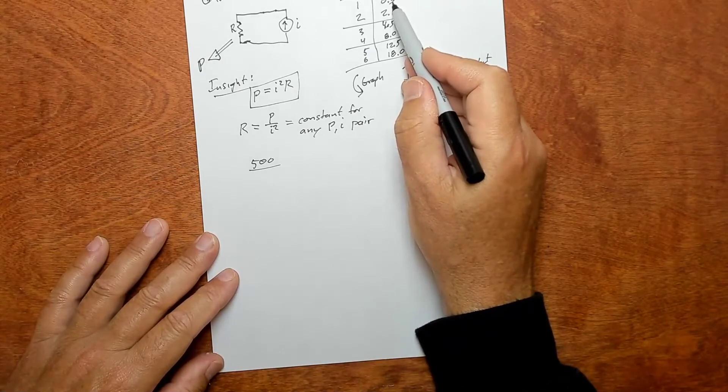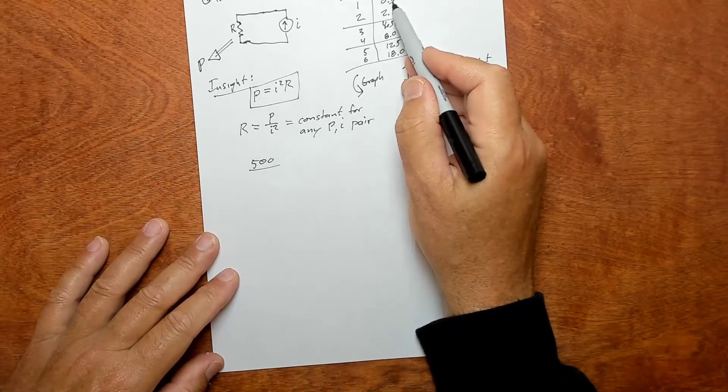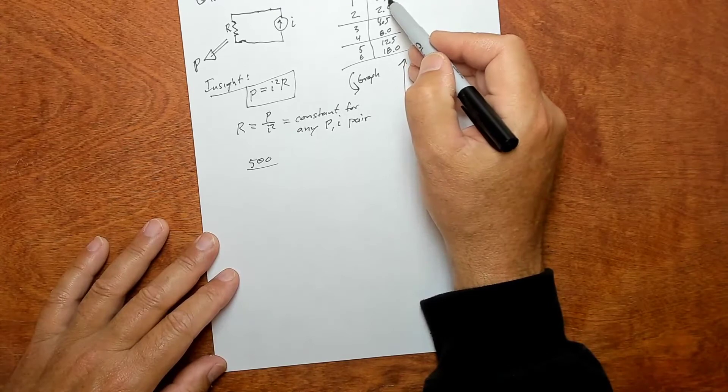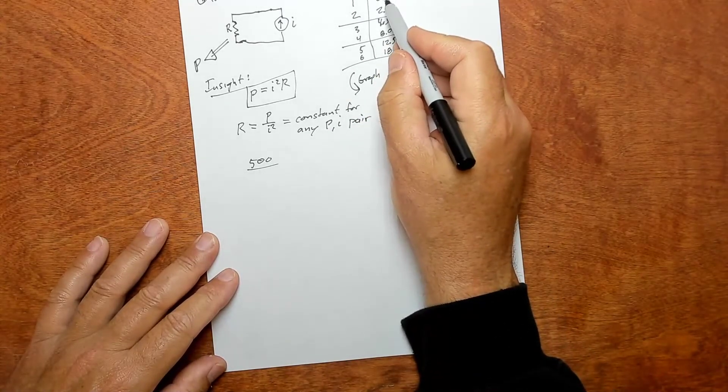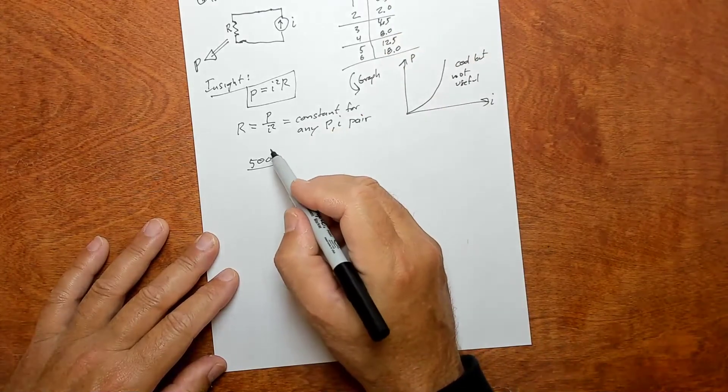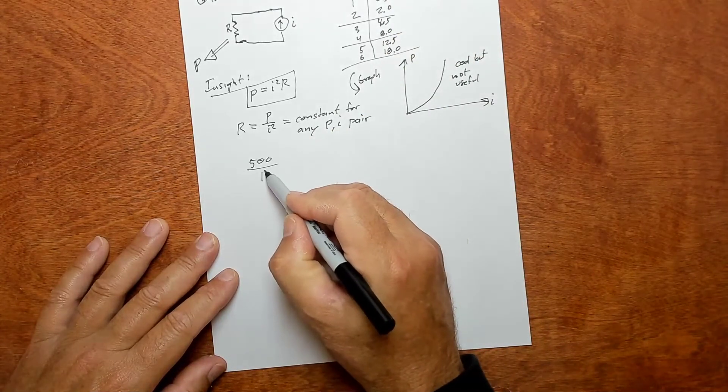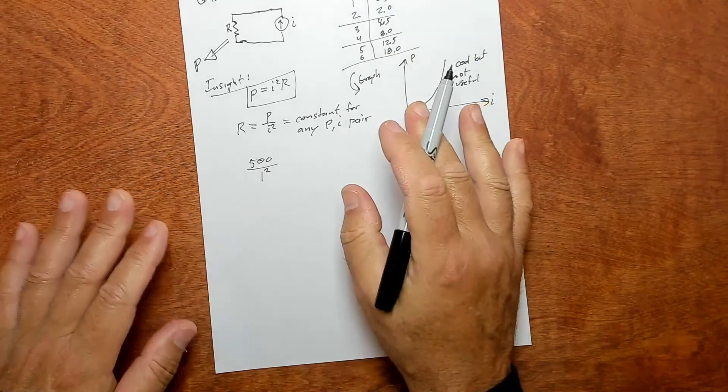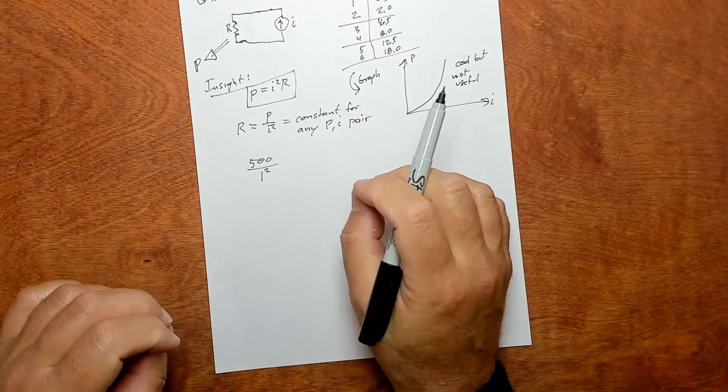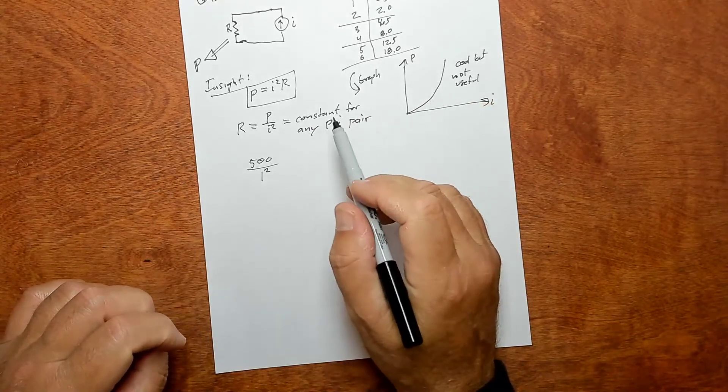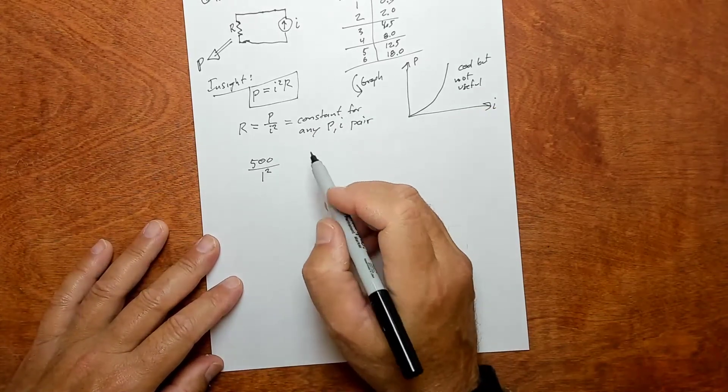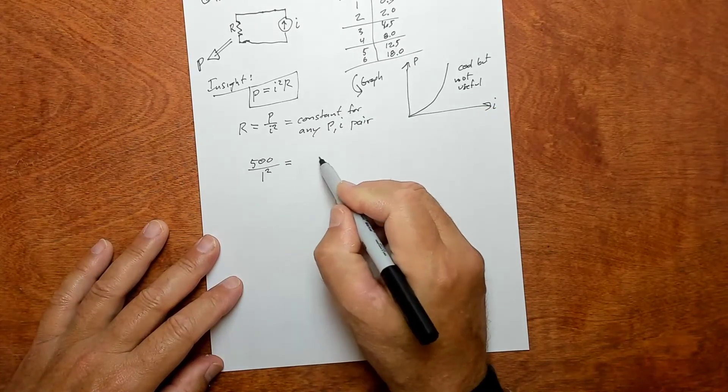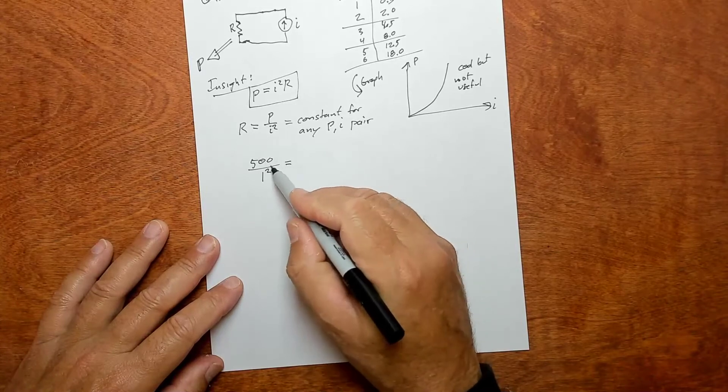So let's just take this one. This is 0.5 kilowatts, or 500 watts. When you're doing these calculations, you need to make sure they're all in base units. We're given kilowatts here, so we're going to divide power by current squared. We need to make sure that everything's in base units - no engineering units, no kilo, mega, micro, anything, just base.